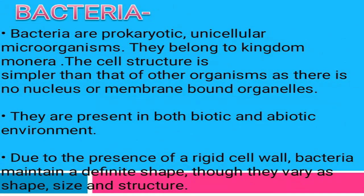Bacteria is a prokaryote, which means it does not have a well-defined nucleus and membrane-bound organelles are also not present. It is a unicellular organism, meaning a single-celled organism, and it belongs to kingdom Monera. These are found in both biotic and abiotic environments — biotic means in living organisms like human beings and plants, and abiotic means in non-living things like soil and water.